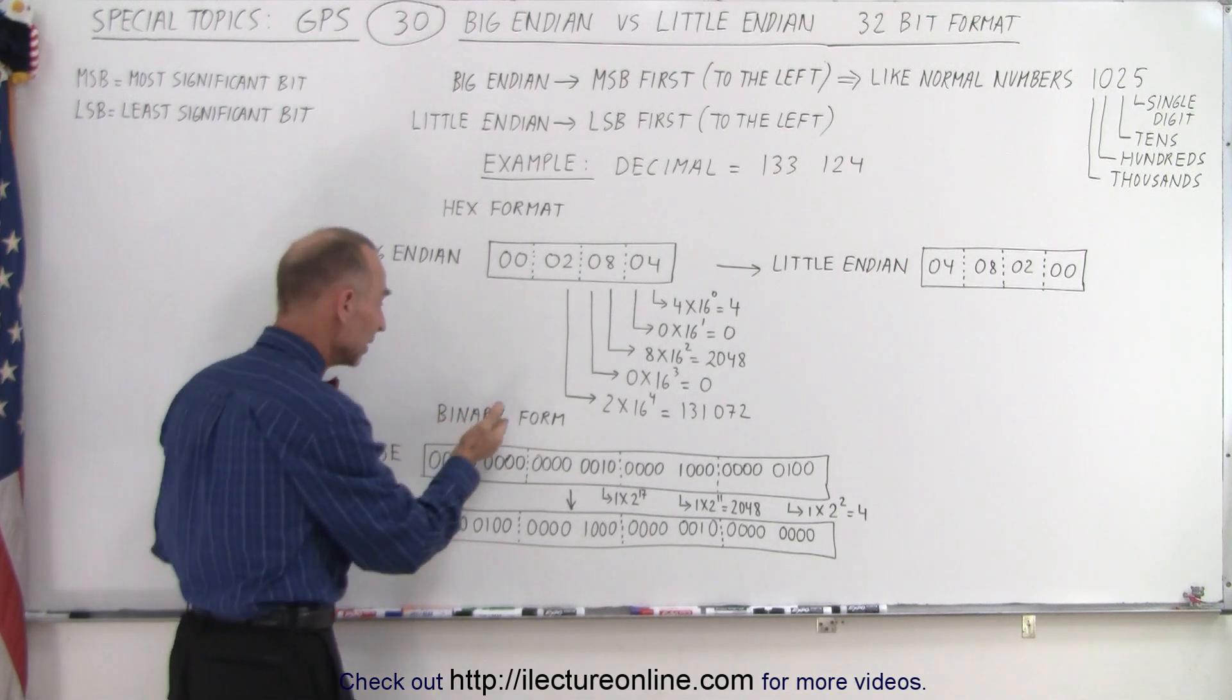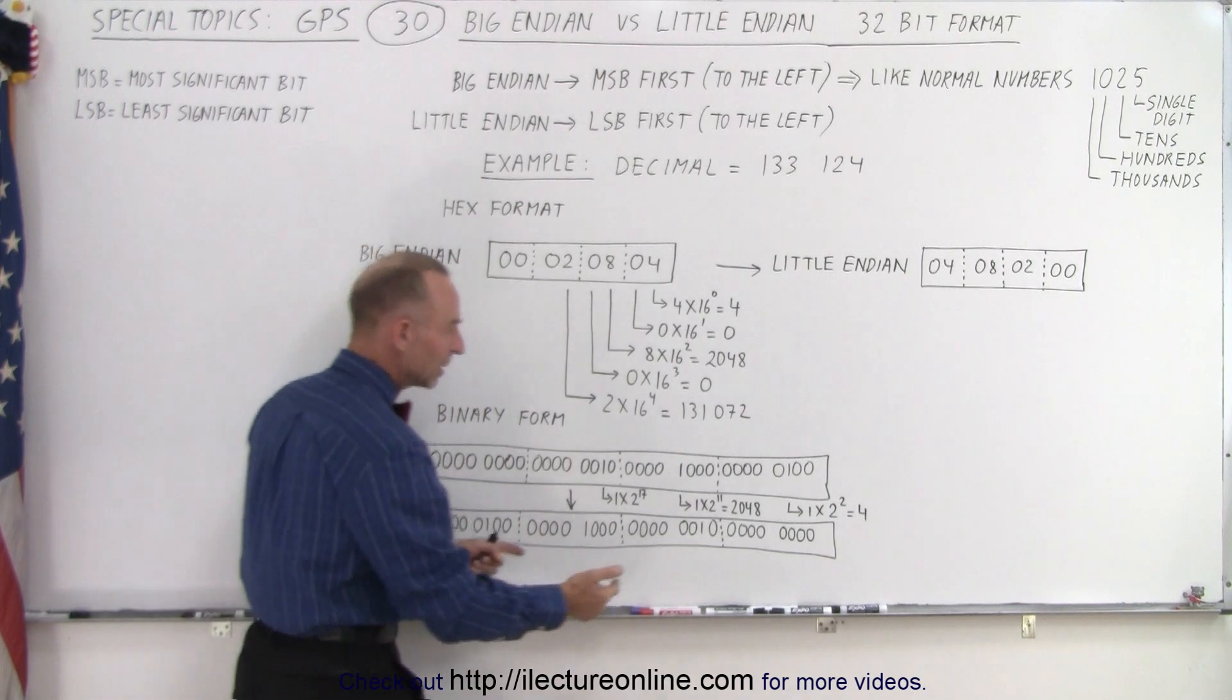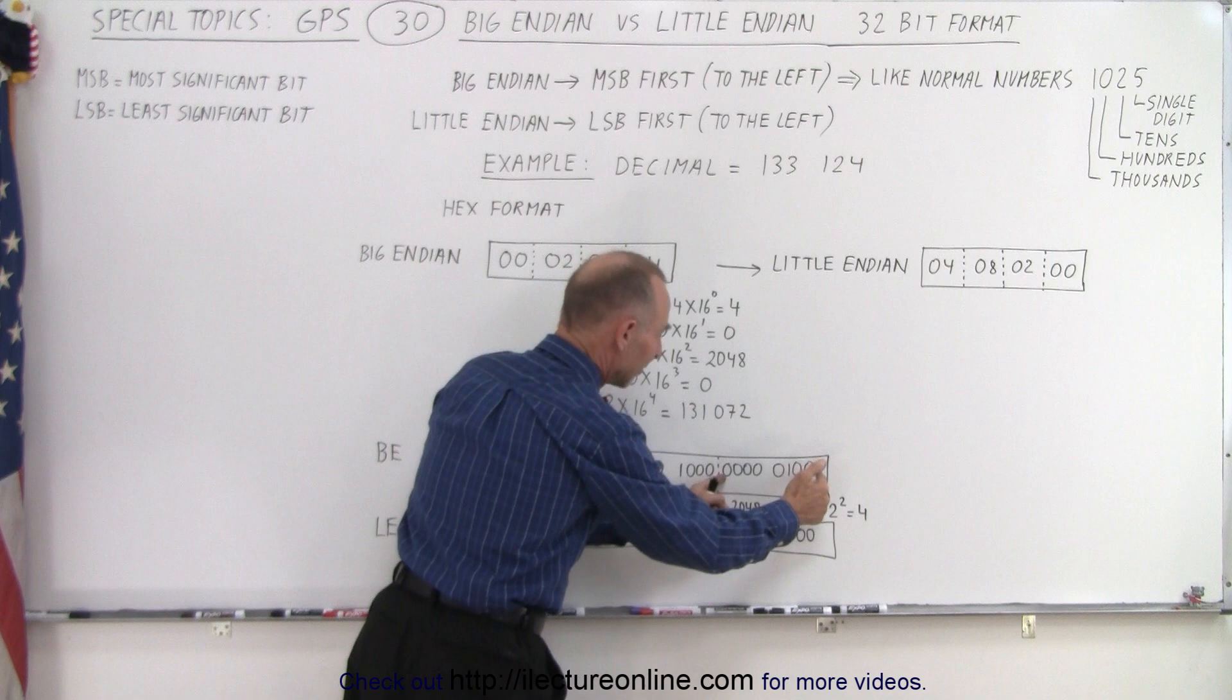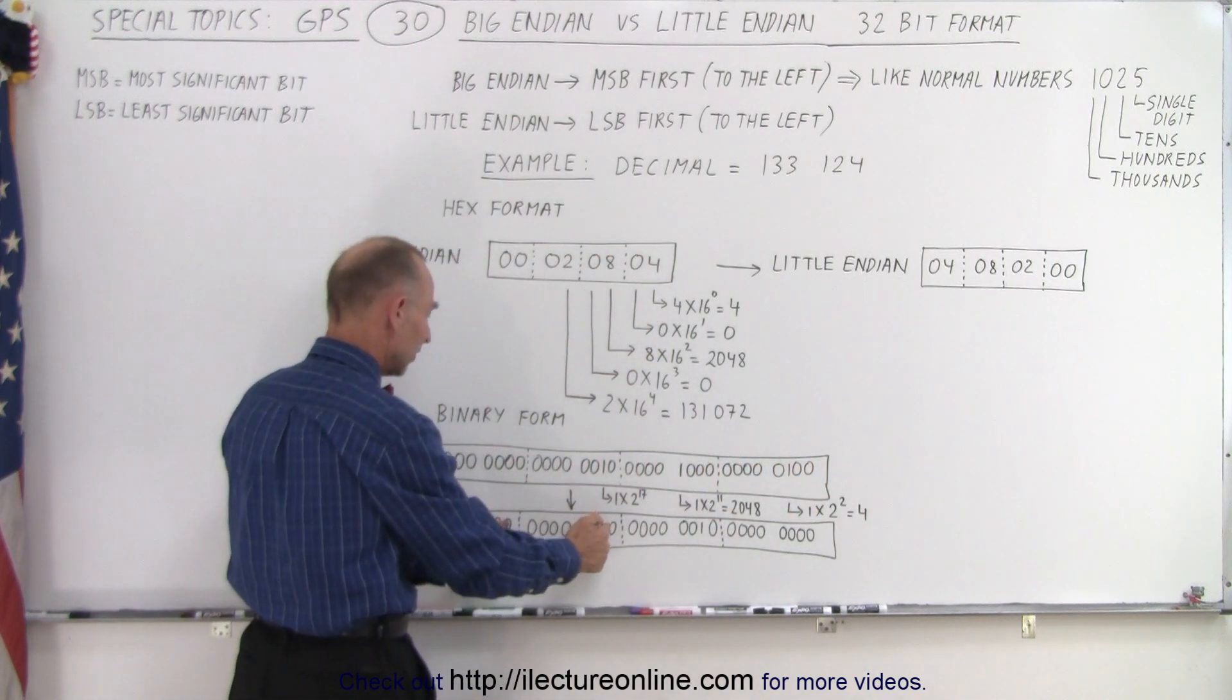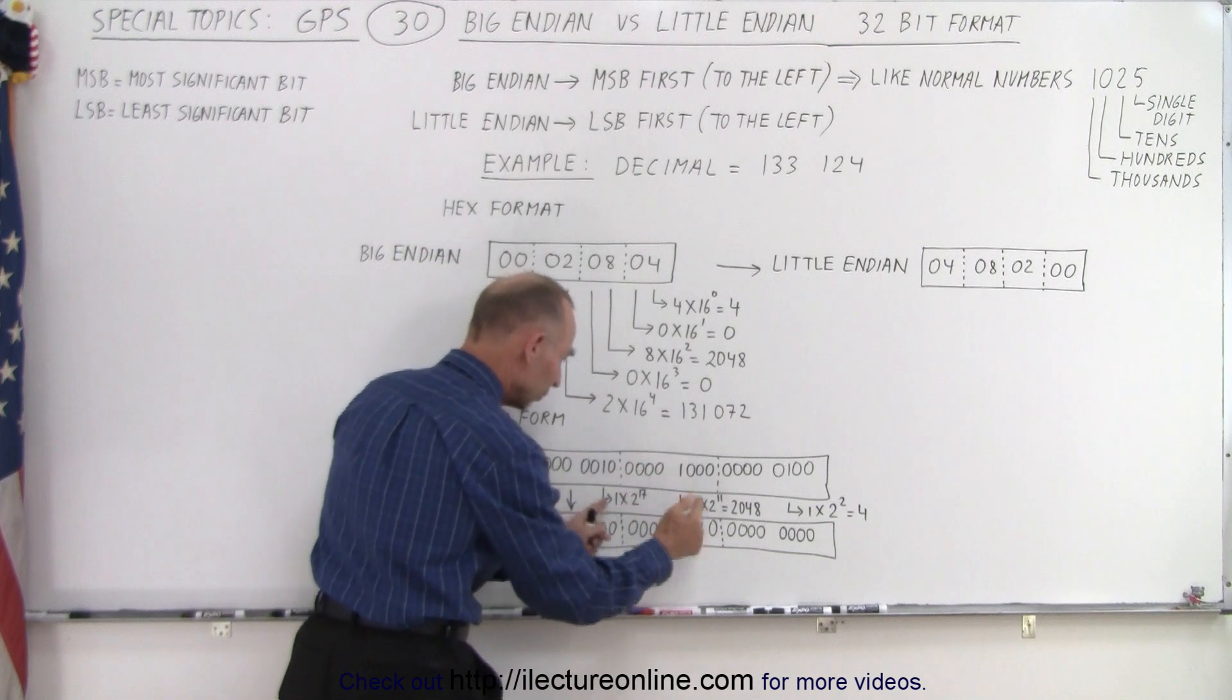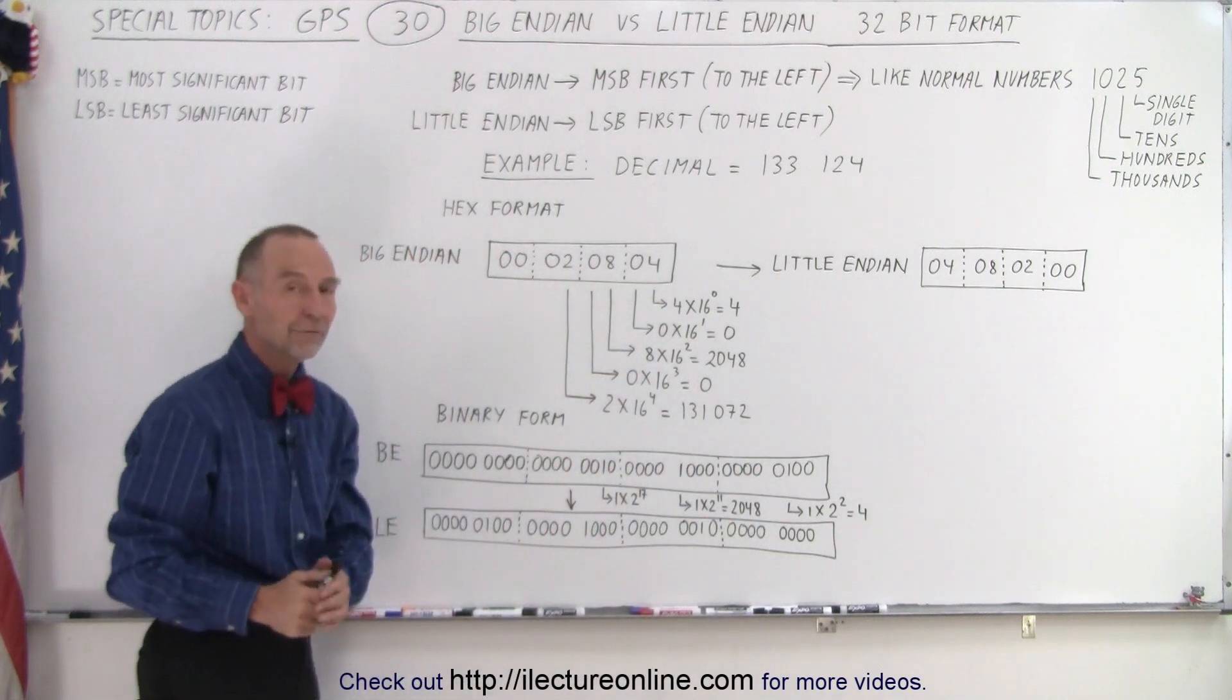And if we do that in binary form, here we have big Endian, there we have little Endian. So again to convert we take the last eight bits and move them to the front. We take the next eight bits, move them second, next eight bits move them third, next eight bits move them fourth. And that's how we convert from one to the other.